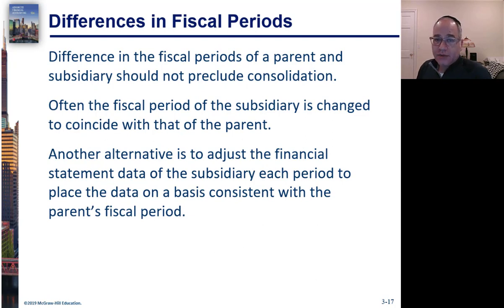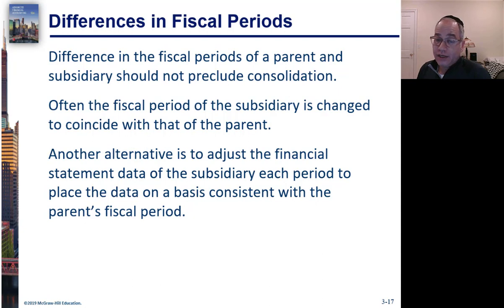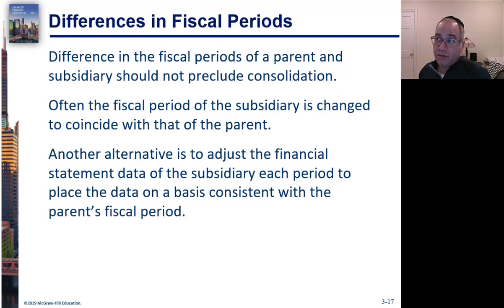Another situation that comes up is where the parent's fiscal period is different from the subsidiary's. The parent might have a December 31st year end, but the subsidiary has a November 30th year end. One thing you can do is change the fiscal period of the subsidiary. The other thing you can do is adjust the subsidiary's data to reflect the parent's fiscal year — remove December from last year and add December of this year to recreate the financial statements as if December 31st were the fiscal period of the subsidiary, then consolidate them. You're not going to consolidate apples with oranges.